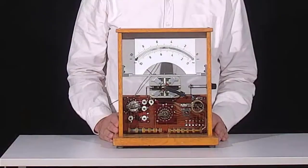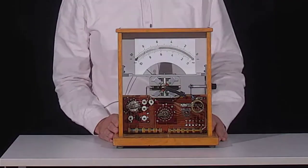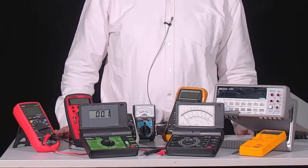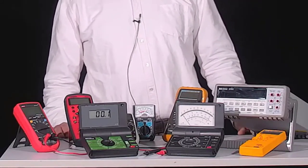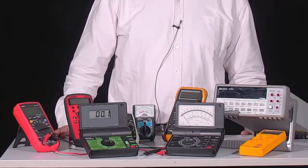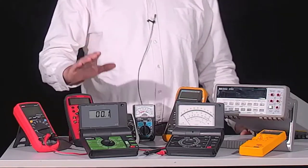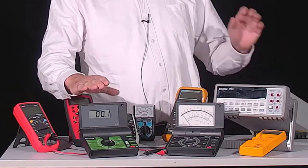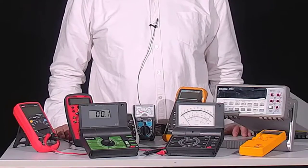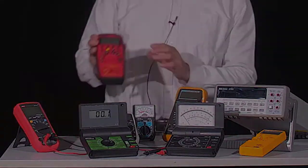This basic principle is still used today in all multimeters. Less visible, but an important distinguishing feature of the multimeter is the accuracy of the instruments. It is usually specified in the datasheet as a percentage value and refers to the measuring range selected for the measurement. Digital instruments are not always more accurate than analog instruments.